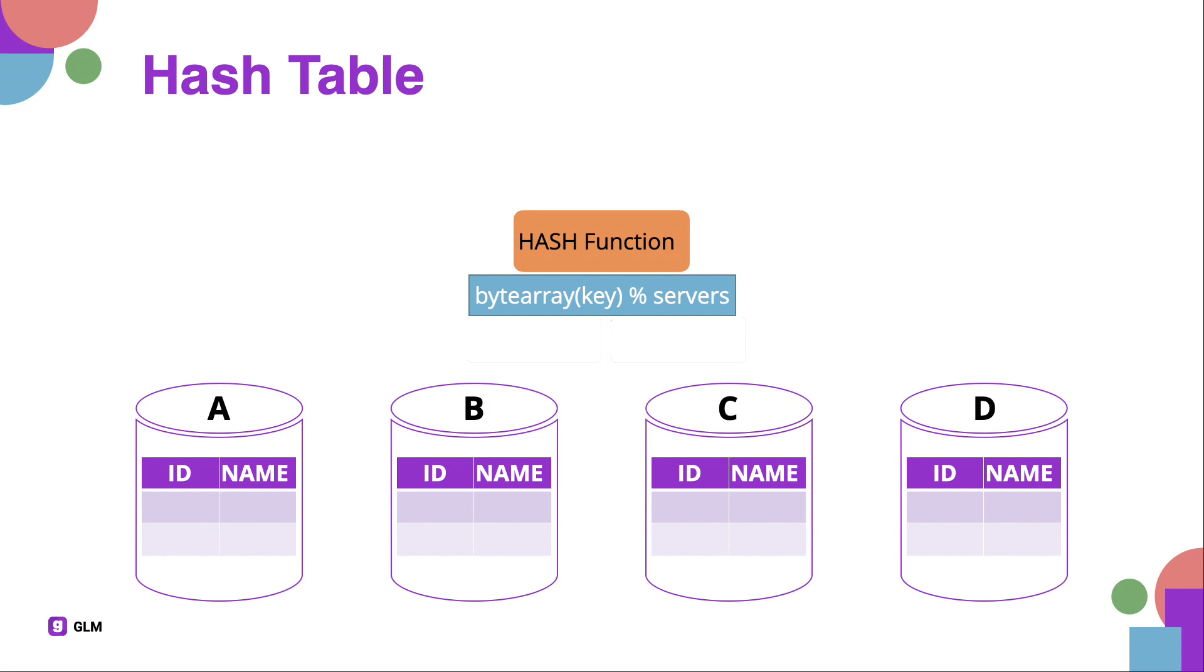Let's say in this case key equals name and our current server number is 4. If you insert the name John, we hash the name and get an index, such as index 0, which in this case is server A.